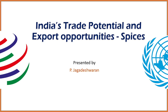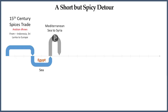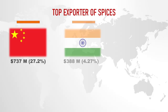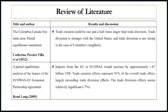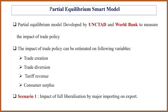Hello everyone, welcome to another video. Previously we discussed India's trade potential and export opportunities in spices — in particular black pepper, cardamom, and turmeric. In that previous video we discussed the gravity trade model, how it works, and how countries benefit from it. In this video we will be discussing the SMART model, which is the partial equilibrium model.